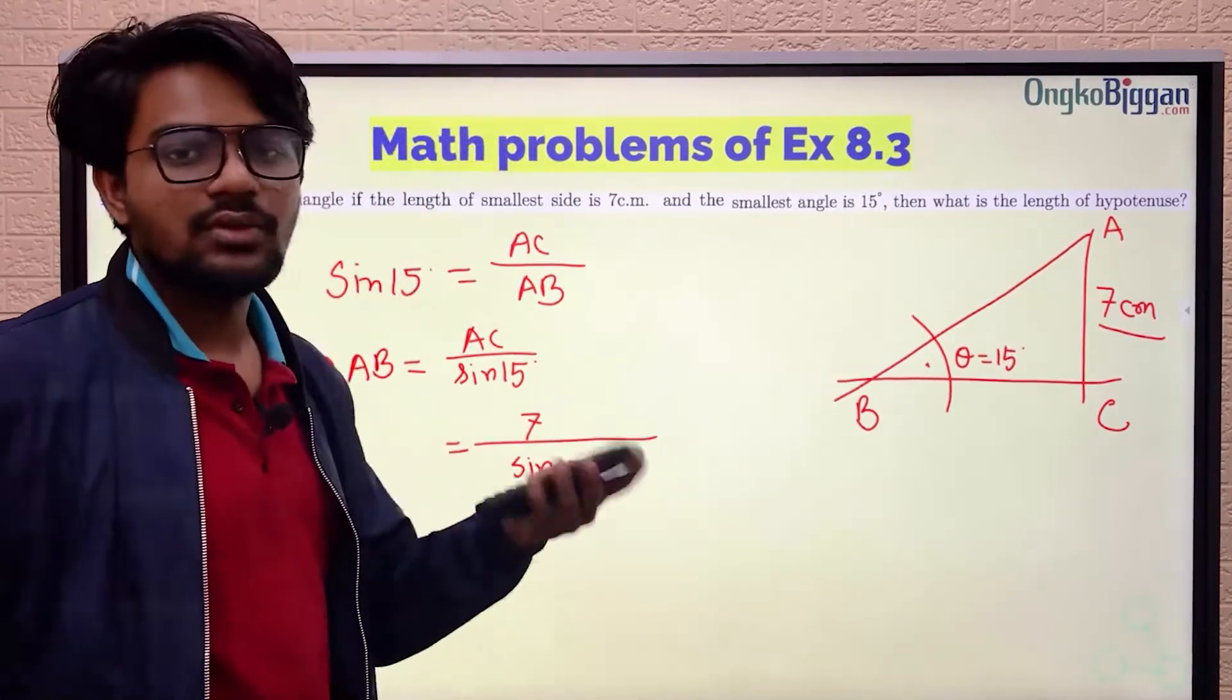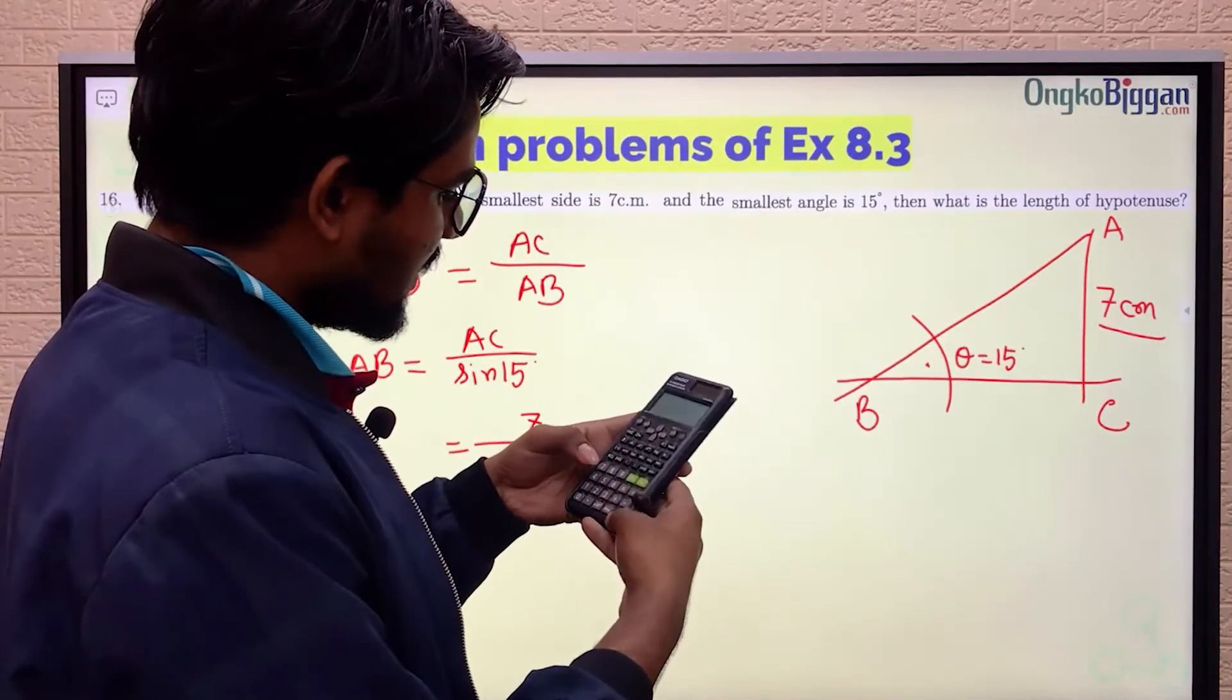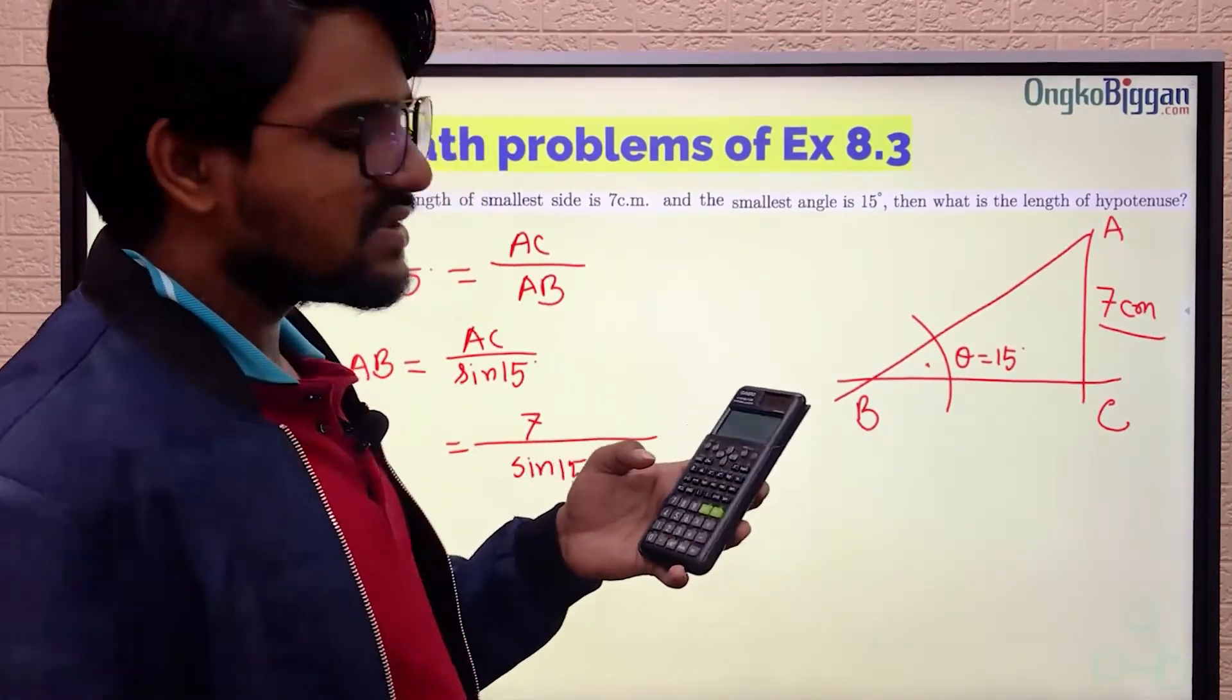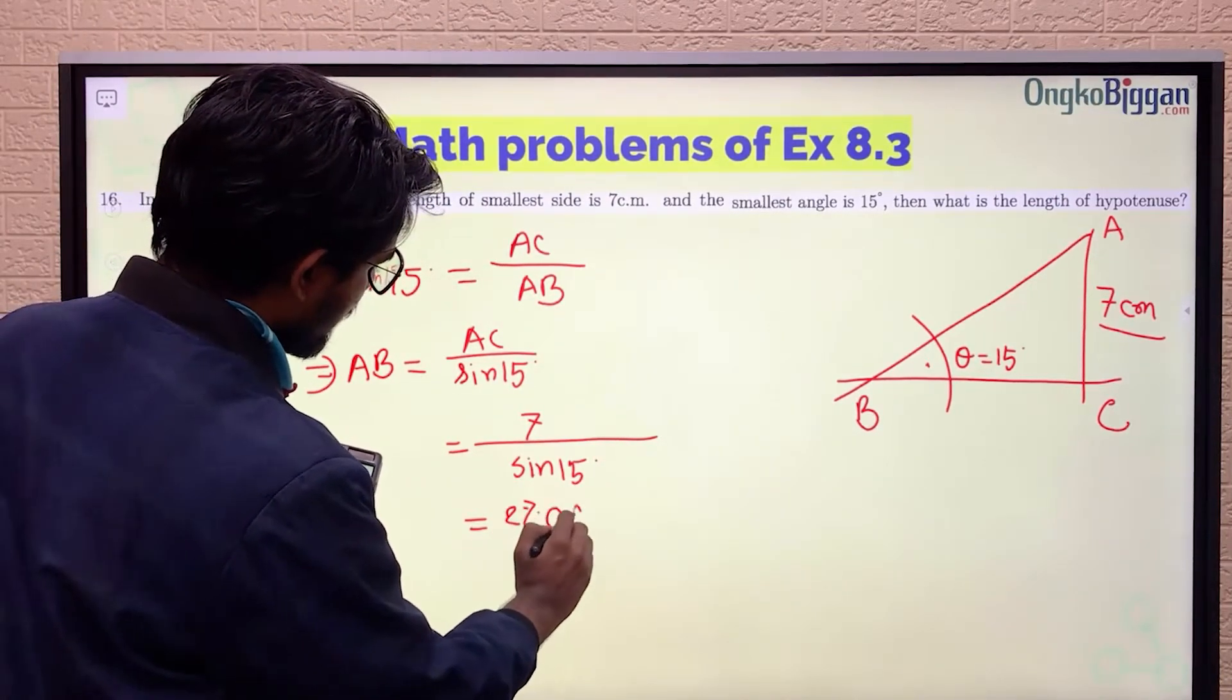So now if you write 7 divided by sin 15, we will actually get the value of our hypotenuse, that is 27.0459—27.0459 centimeters.